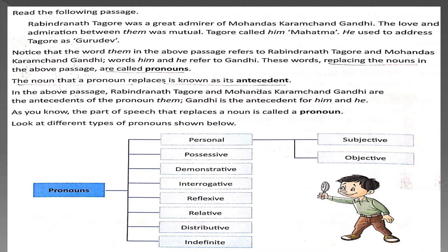Now, look at the different types of pronouns. How many types of pronouns are there? There are eight types of pronouns: Personal pronoun, Possessive pronoun, Demonstrative pronoun, Interrogative pronoun, Reflexive pronoun, Relative pronoun, Distributive pronoun, and Indefinite pronoun.